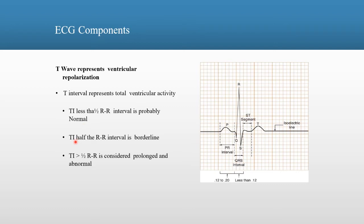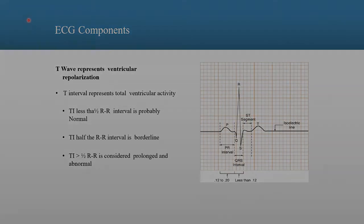If the T-Interval is half the R-to-R interval, it is borderline. If the T-Interval is greater than one-half the R-to-R interval, it is considered prolonged and abnormal.